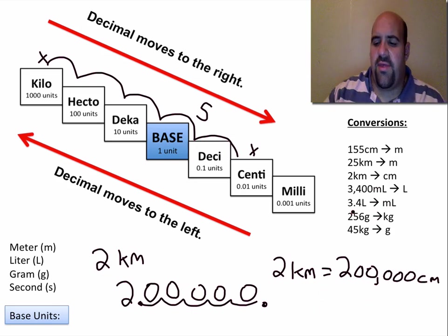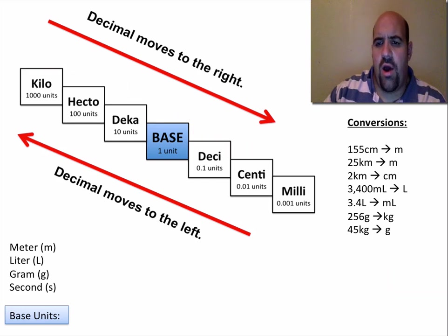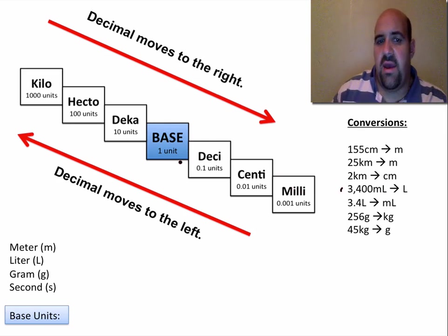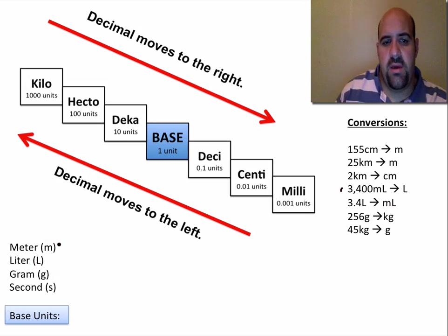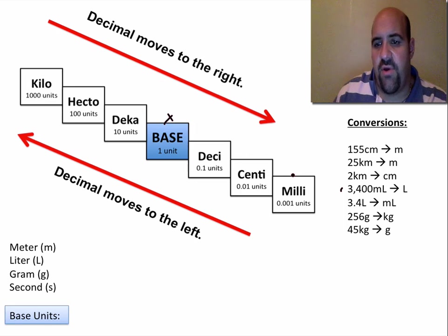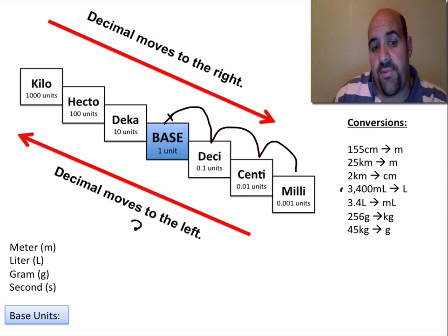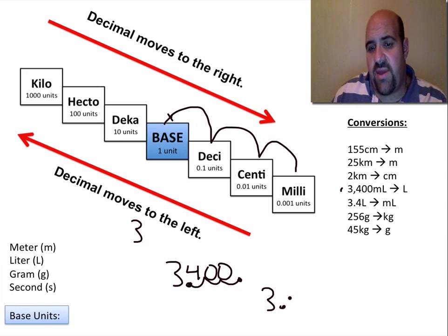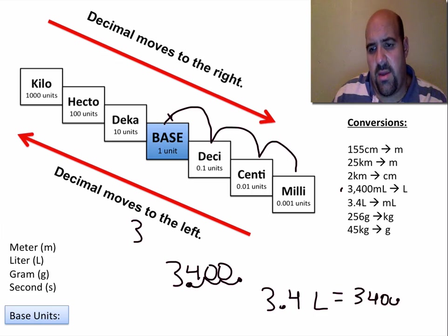We can do the same thing with milliliters. If we have 3,400 mL — milliliters — and a liter is a base unit, we're converting into liters. Milli is here and liter is here, so we go up one, two, three steps. The decimal moves to the left three places. We have 3,400 and the decimal moves one, two, three places to the left — that's 3.4 liters, equal to 3,400 milliliters.